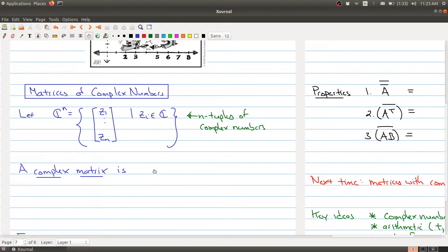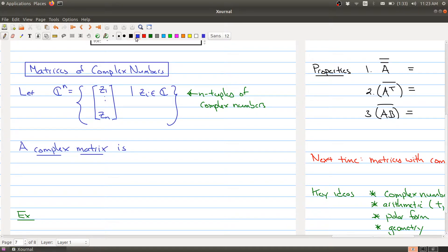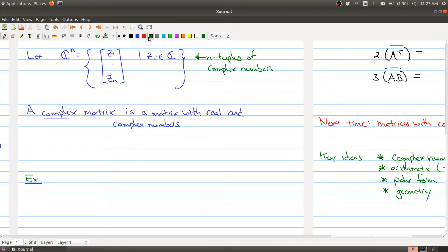And a complex matrix is a matrix where we're allowing both complex and real numbers. Okay, so it's a matrix with real and complex numbers. Okay, so as an example, I have two simple examples here. We have the matrix 2 plus i, i, 4, and then we have negative 1, 2i, and 4 plus 6i. So I have a 2 by 3 matrix. And you can also talk about vectors. Okay, you can think of vectors as complex matrices as well, right? So we have 3 plus 2i, and 1, and 0. So these are both examples of complex matrices.